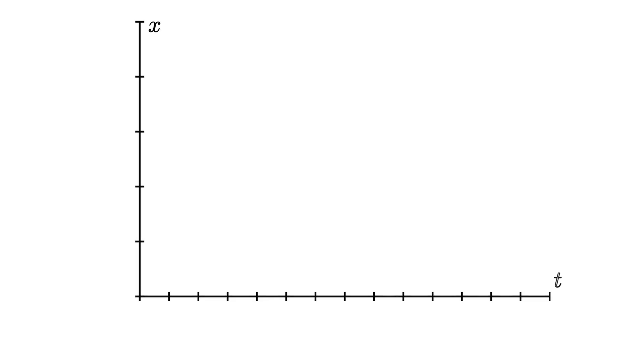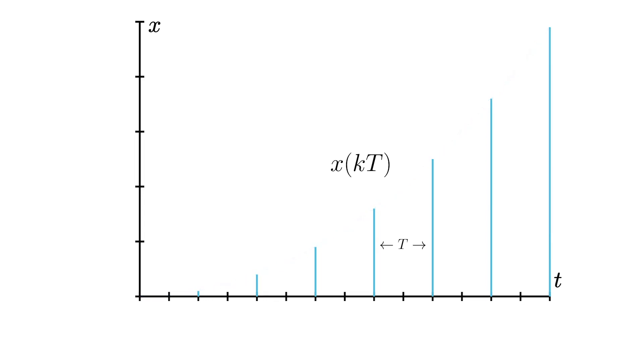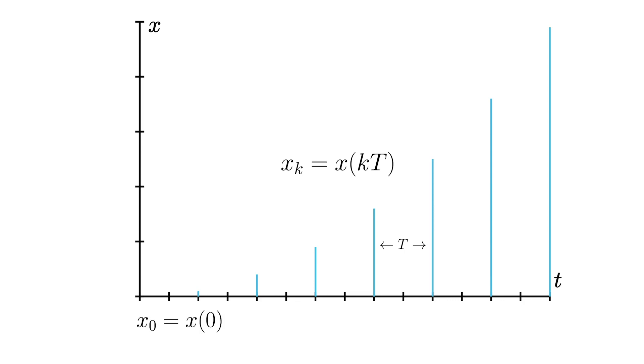If you've clicked on this video, you almost certainly know that most of the data that we handle nowadays is digital — meaning the data is discrete along the time axis. It is sampled data, so instead of having continuous signals like x(t) defined for every possible value of time, we now have sequences where we have x(kT), where T is our sampling interval. I'll abbreviate this as x sub k, so x sub 0 is x(0), x sub 5 is x(5T), and so forth.